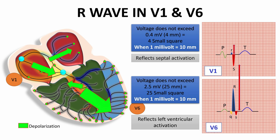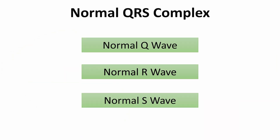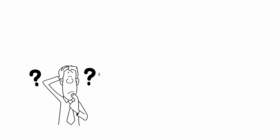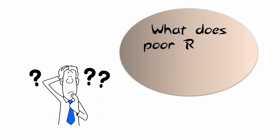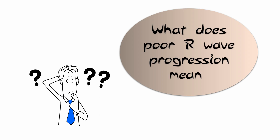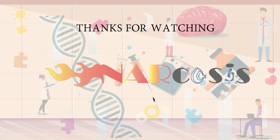We have now finished the ECG grid and the normal P, Q, and R wave values. We will continue discussing normal ECG values in the next videos. The question of the day is: what does poor R wave progression mean?